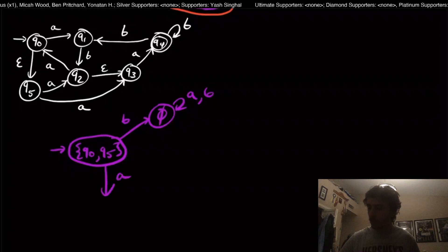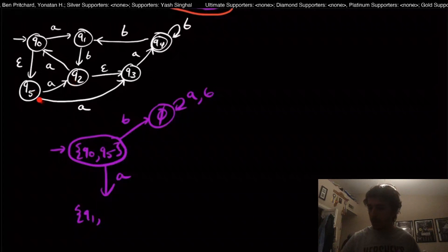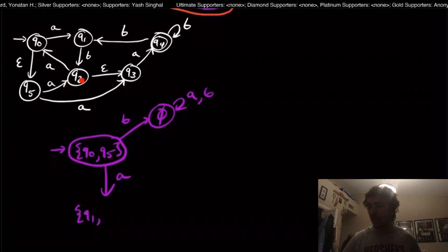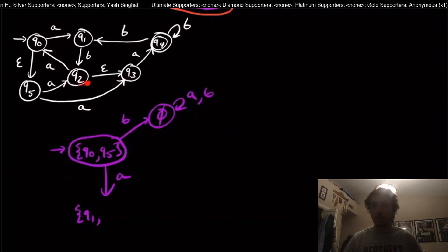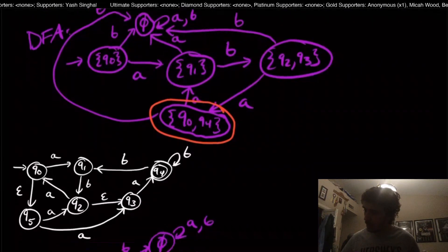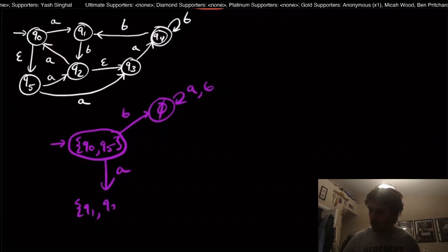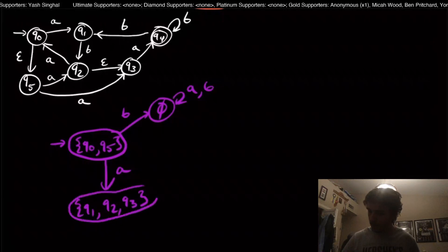On input A from {q0, q5}, things get more interesting. q0 goes to q1. But q5 can go to q2, and also to q3. And q3 is already handled because q2 has an epsilon transition to q3. So from {q0, q5} on A, we can reach {q1, q2, q3}.